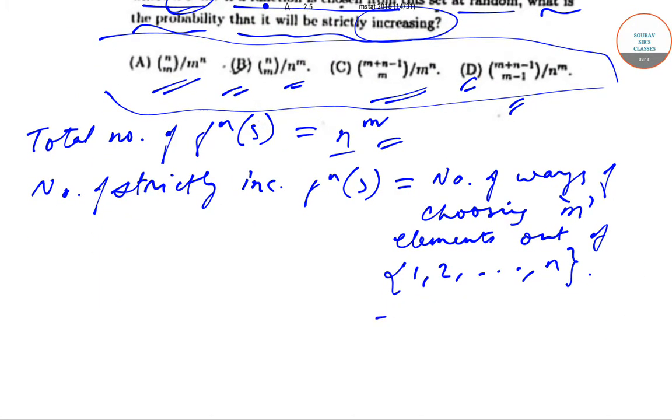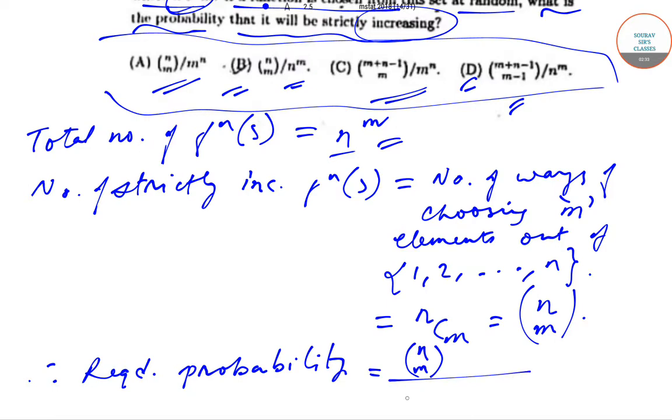Therefore, the required probability will be equal to nCm/n^m, which is option B. So today we have solved question number 13 from the ISI M.Stat question paper of year 2018.